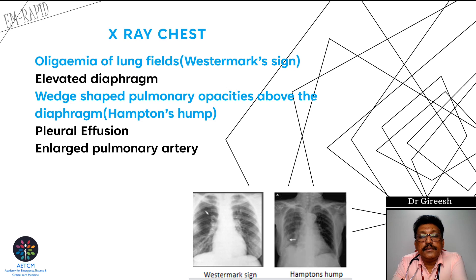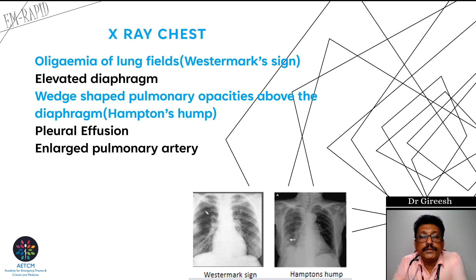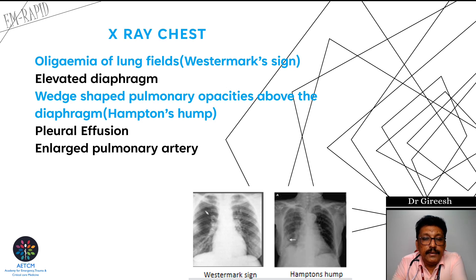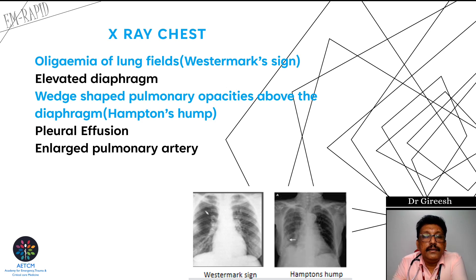Two classical chest X-ray findings are Westermark's sign and Hampton's Hump. Westermark's sign refers to oligemia of lung fields — because the blood vessels are totally occluded, you do not see any lung markings after the occlusion. Hampton's Hump is a wedge-shaped pulmonary opacity above the diaphragm. The diaphragm can be elevated, and there may also be pleural effusion and an enlarged pulmonary artery. However, most of the time in ER, the chest X-ray will be mostly normal, as can the ECG.